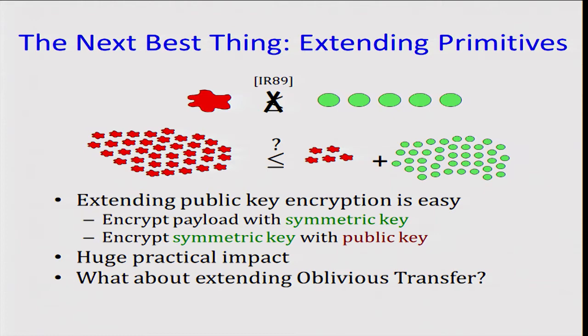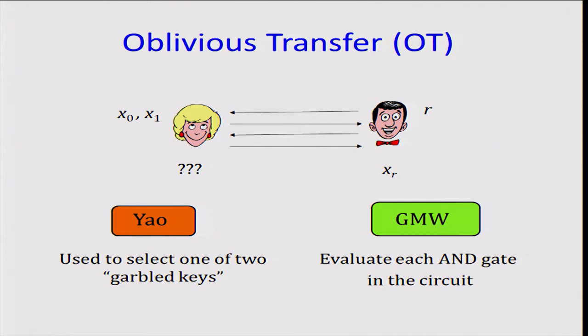This naturally raises the question, what about extending other public key primitives such as oblivious transfer? Recall in the problem of oblivious transfer, there's a sender with two inputs X0 and X1, and there's a receiver with input R. At the end of the protocol, the sender does not learn anything, but the receiver learns the sender input which corresponds to a selection bit.